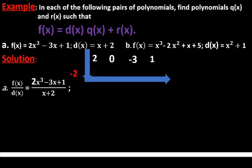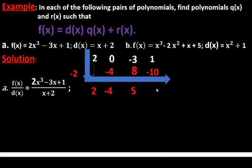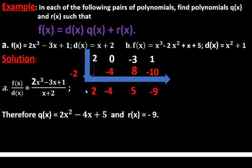Since x+2 = x - (-2), we use -2 in synthetic division. Starting with 2: multiply 2 by -2 to get -4; add -4 + 0 = -4. Multiply -4 by -2 to get +8; add -3 + 8 = 5. Multiply 5 by -2 to get -10; add 1 + (-10) = -9. So the quotient is 2x² - 4x + 5 and the remainder is -9.